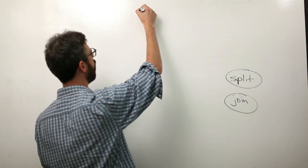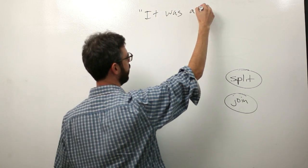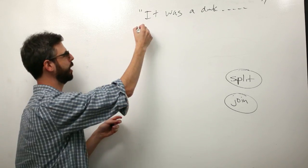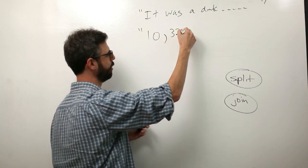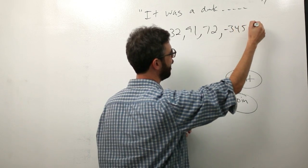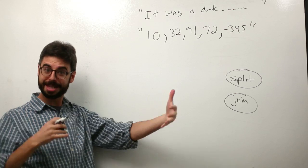So let's think, there's a couple different scenarios. One we might have like a string that's like, it was a dark and stormy night. We might have a string that's 10 comma 32 comma 91 comma 73 comma negative 4, 345.